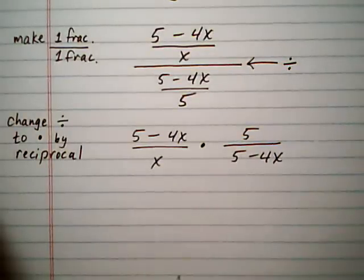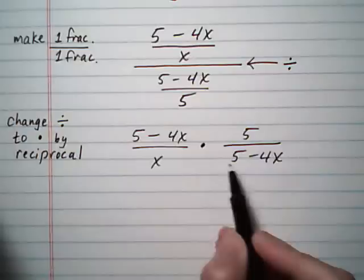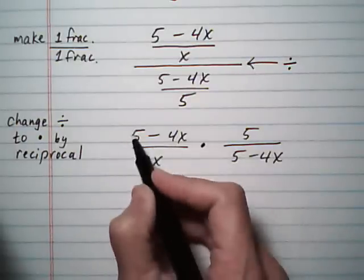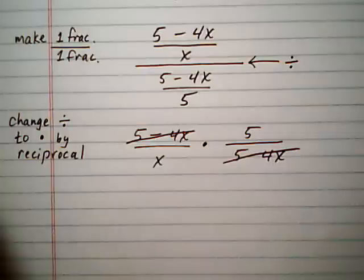And then we can look to see if any canceling takes place. Usually we want to factor before canceling. In this case, there's no factoring to do, plus these two right away are the same anyway, so we're going to cancel them out.